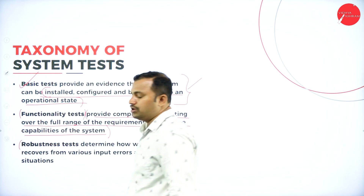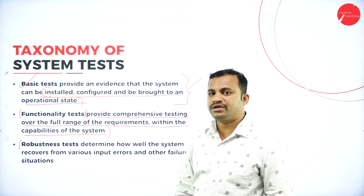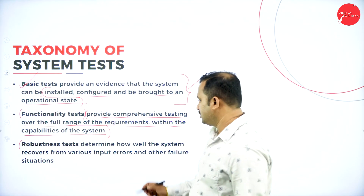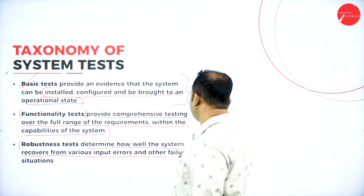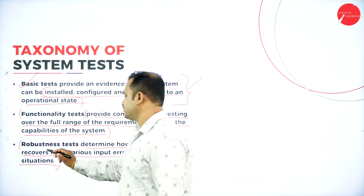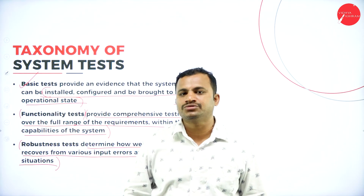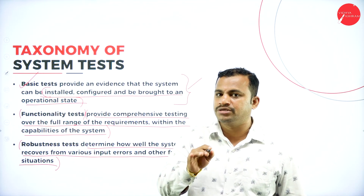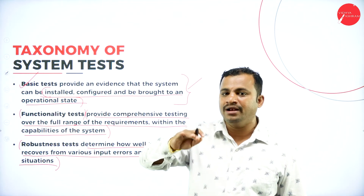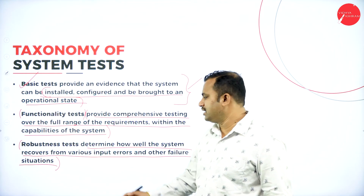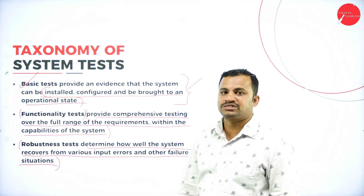Then, robustness test. Robustness means it has to be efficient and good enough to work in different environments. It determines how well the system recovers from various input errors and other failure situations. In spite of having certain errors, it has to raise an exception to the user so that the user can rectify the mistake and properly give input to the system to produce an output. That is called as a robustness test.